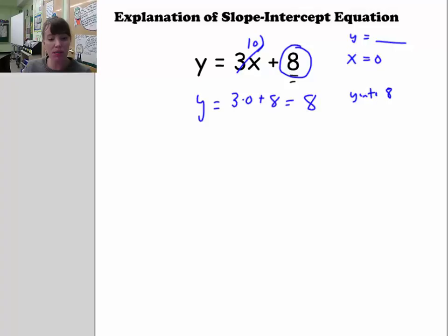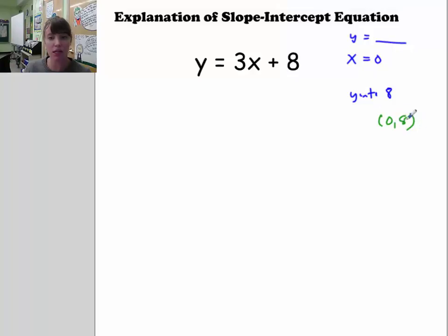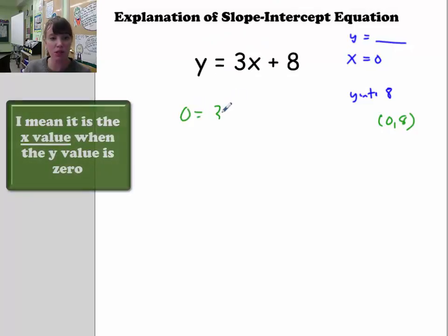The slope is how much x is changing — it's the ratio of rise to run. This coefficient in front is the slope because if you choose a couple of points — for example, the y-intercept is 8, so (0, 8) is a point. The x-intercept is the value when y equals 0, so if I solve for that right here...